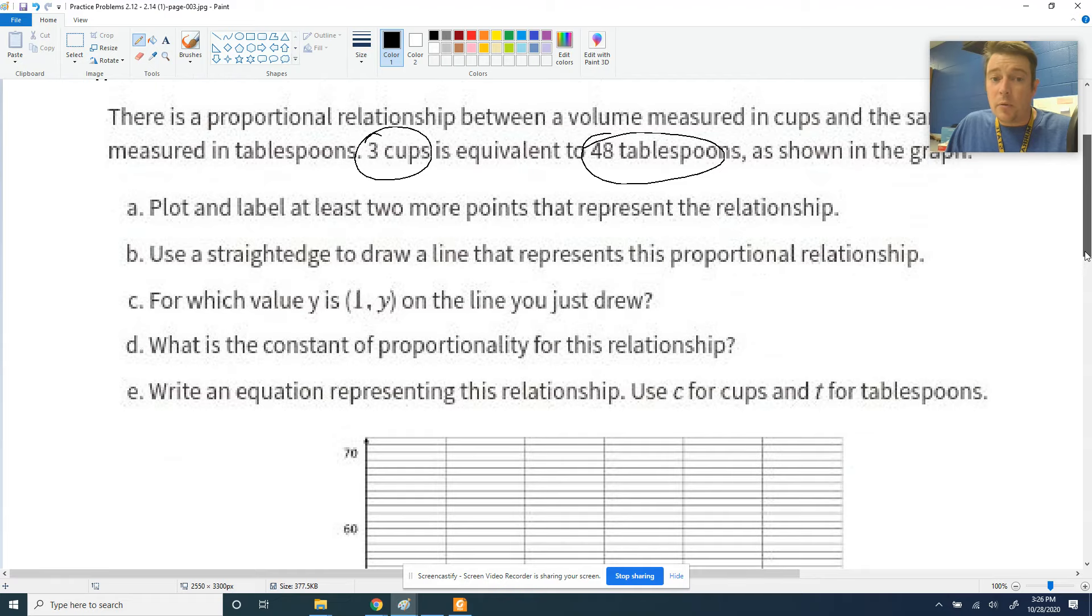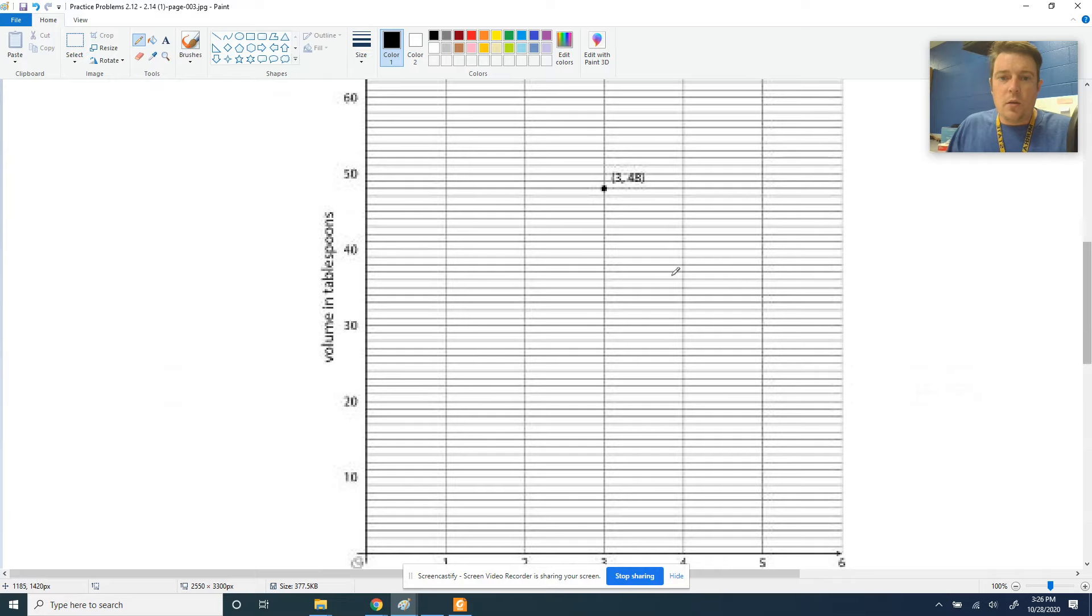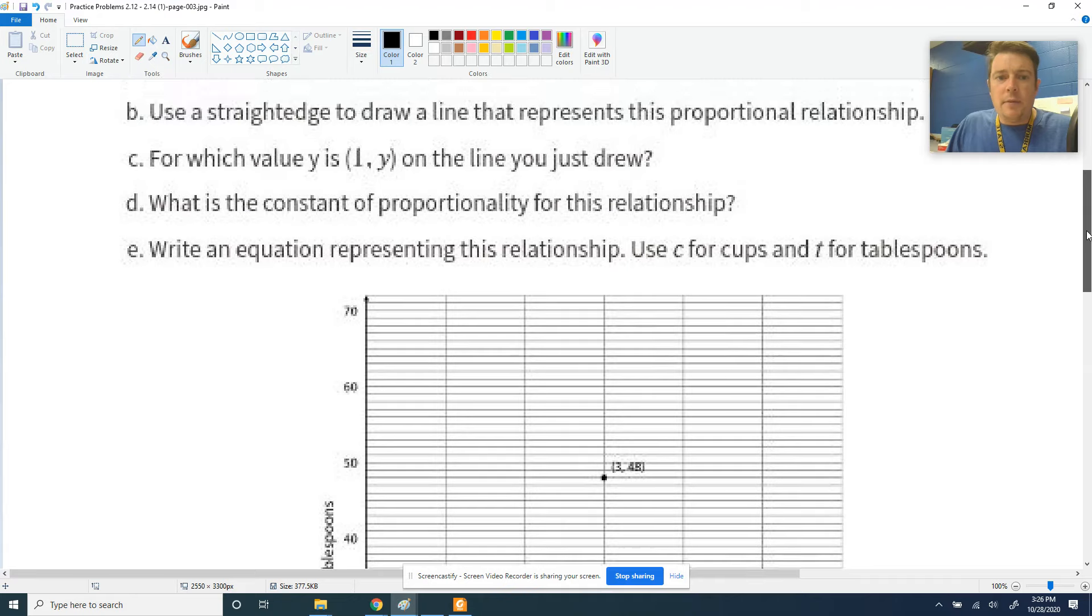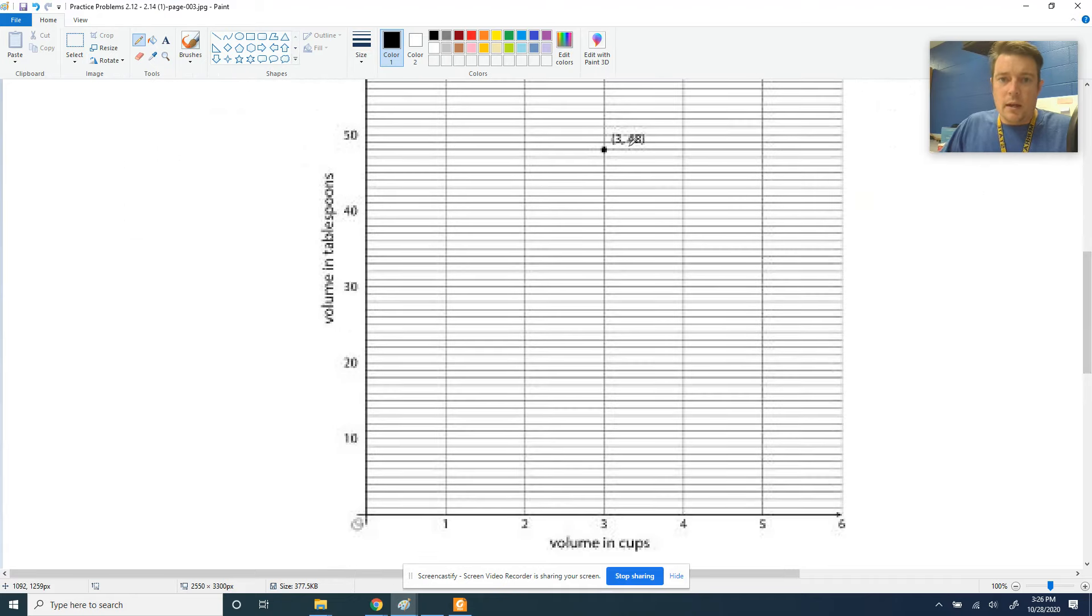We've got to plot and label at least two more points that represent this relationship. So we know that 3, 48, over 3 and up 48 is on there. Notice that they're counting on the y-axis by 1s: 1, 2, 3, 4, 5, so on and so forth. So that's going to help us plot. So if this is a proportional relationship, that means that there is a relationship of a constant between these two points right here.